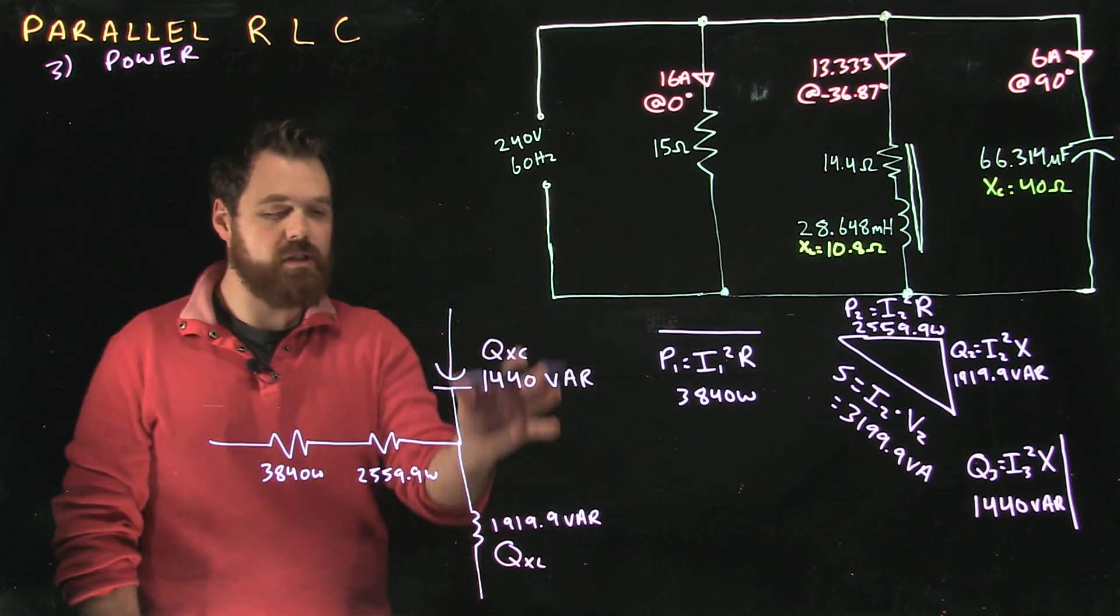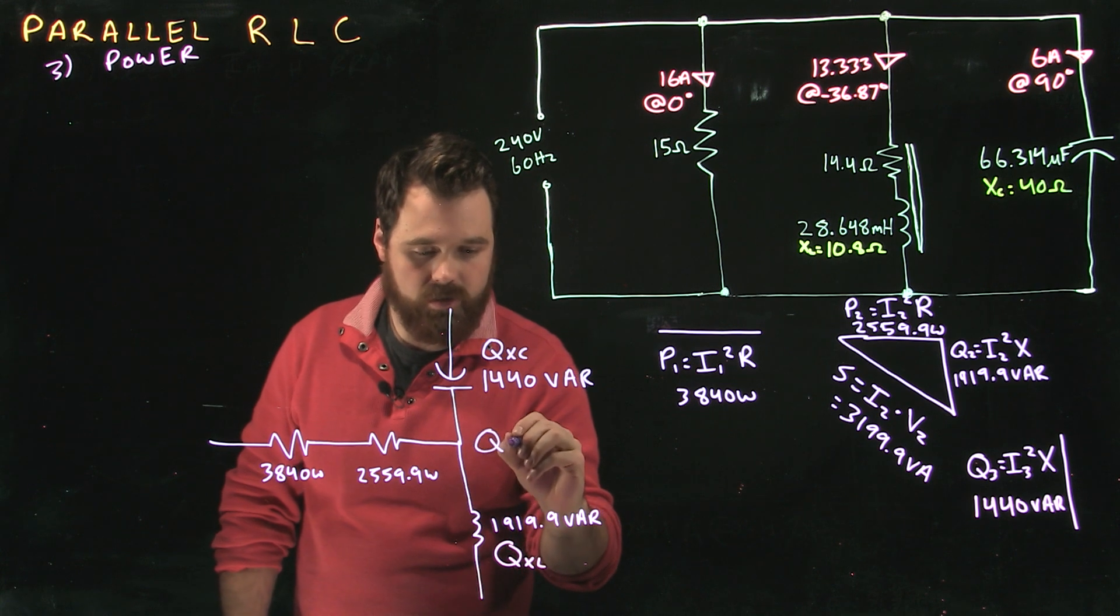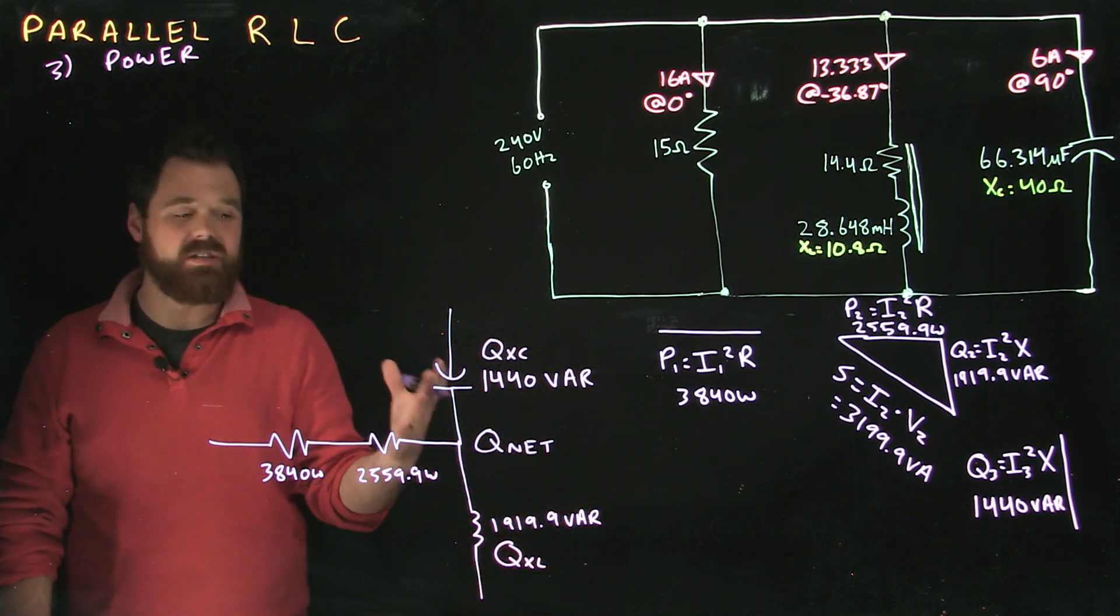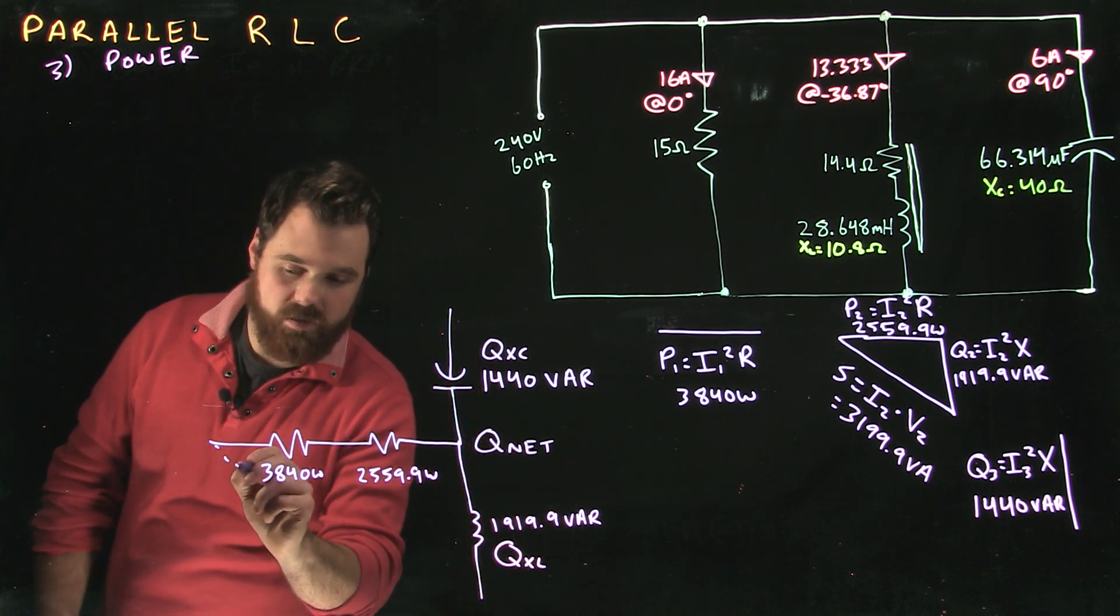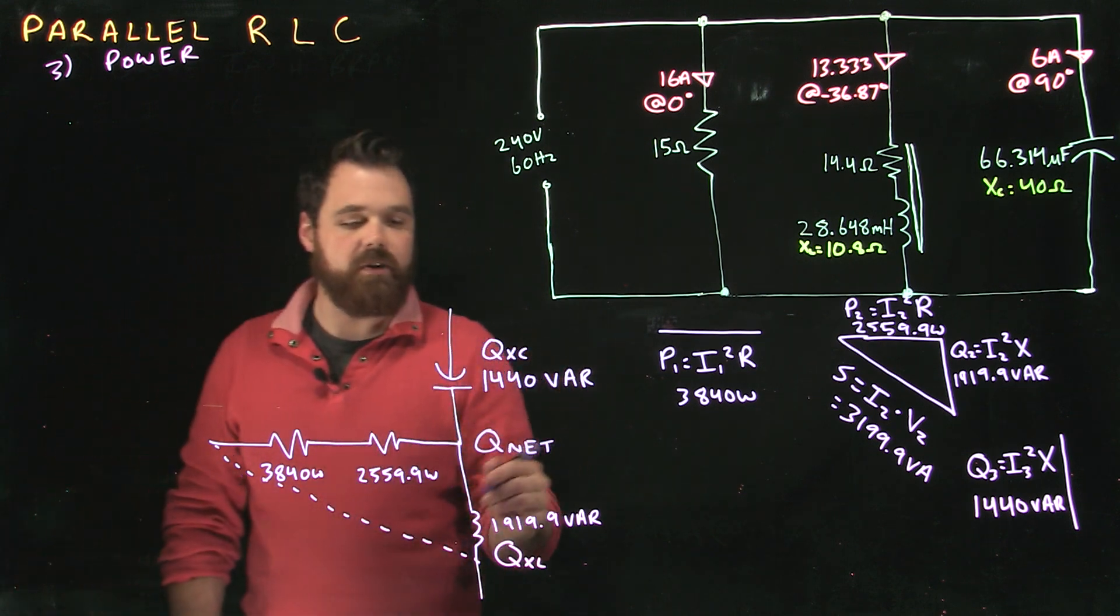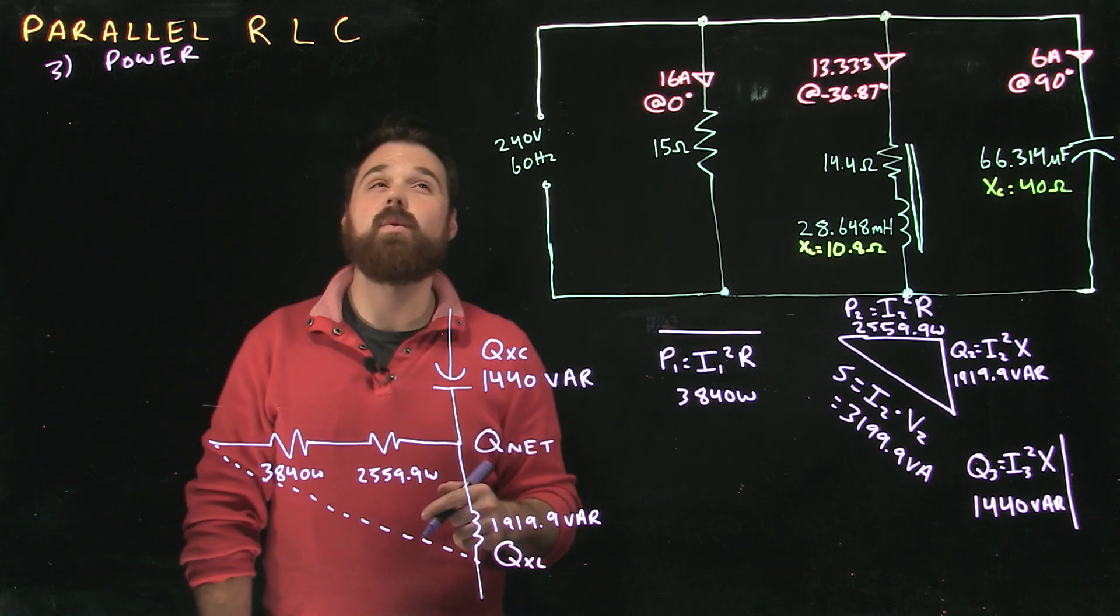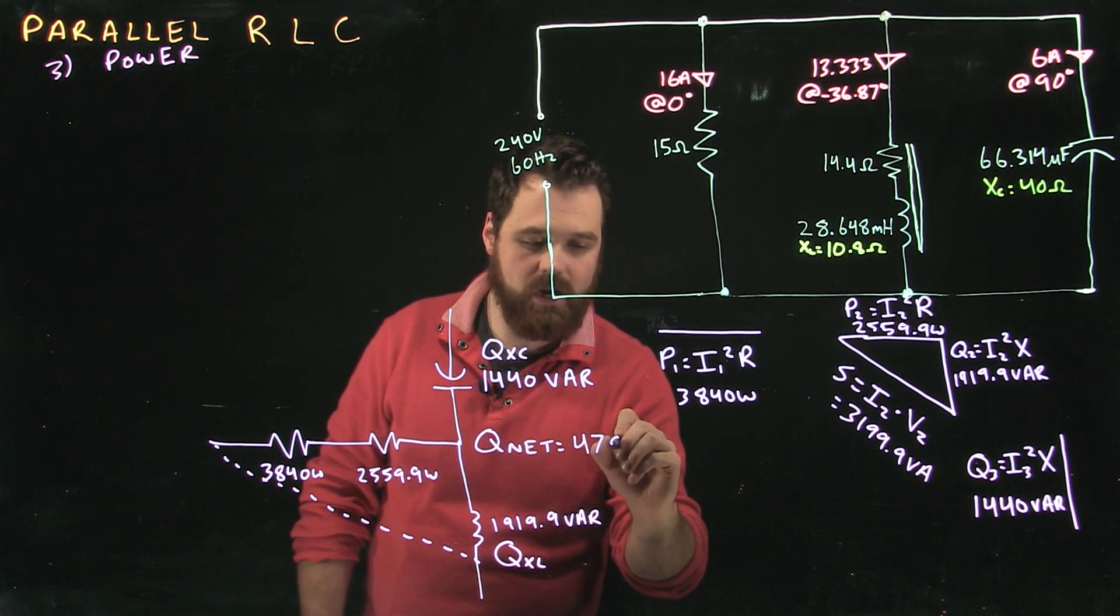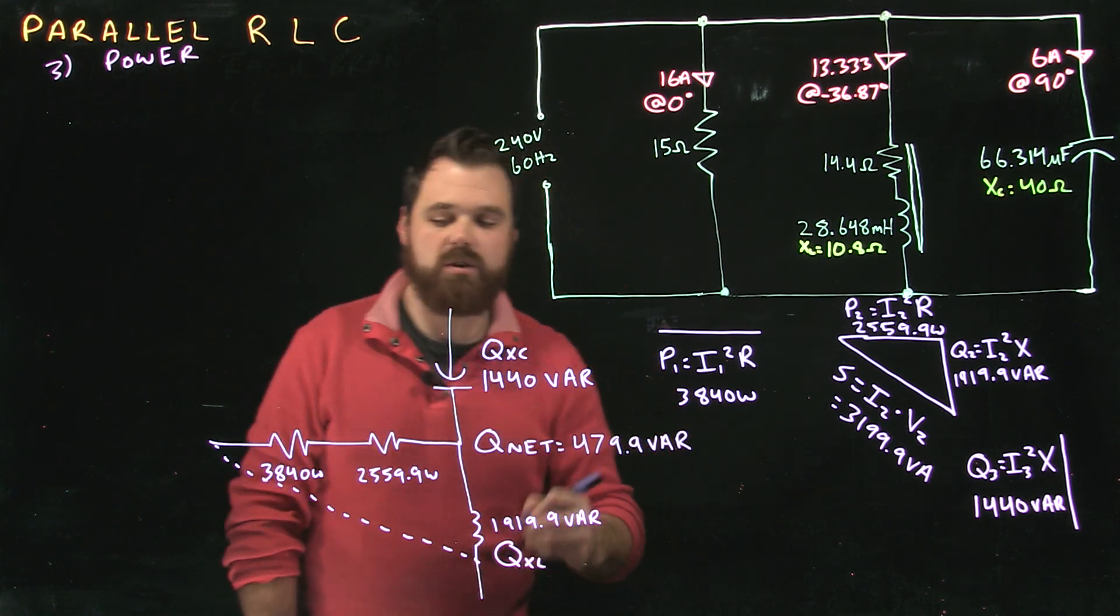Now what happens, because they're occurring at 180 degrees out of phase, we end up with a Q net. In this case, I know my QXL is bigger, so I know that my hypotenuse of this triangle is going to be going this direction. I can figure out my QXL by going 1919.9 minus 1440, which gives me 479.9 Vars as my Q net.